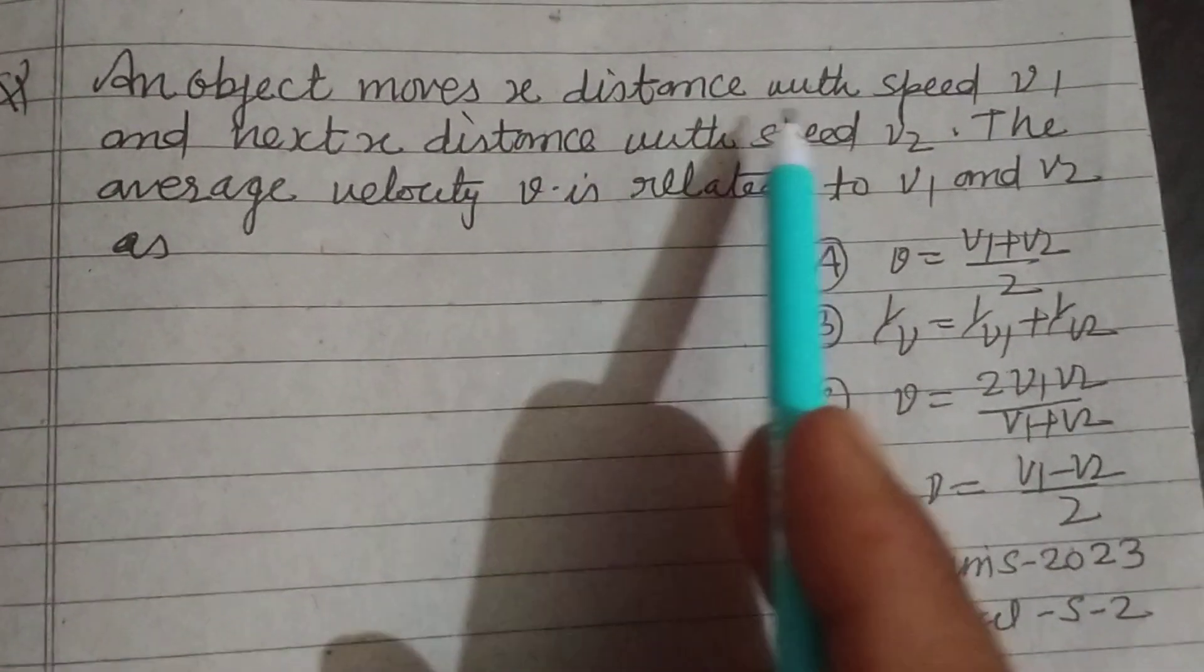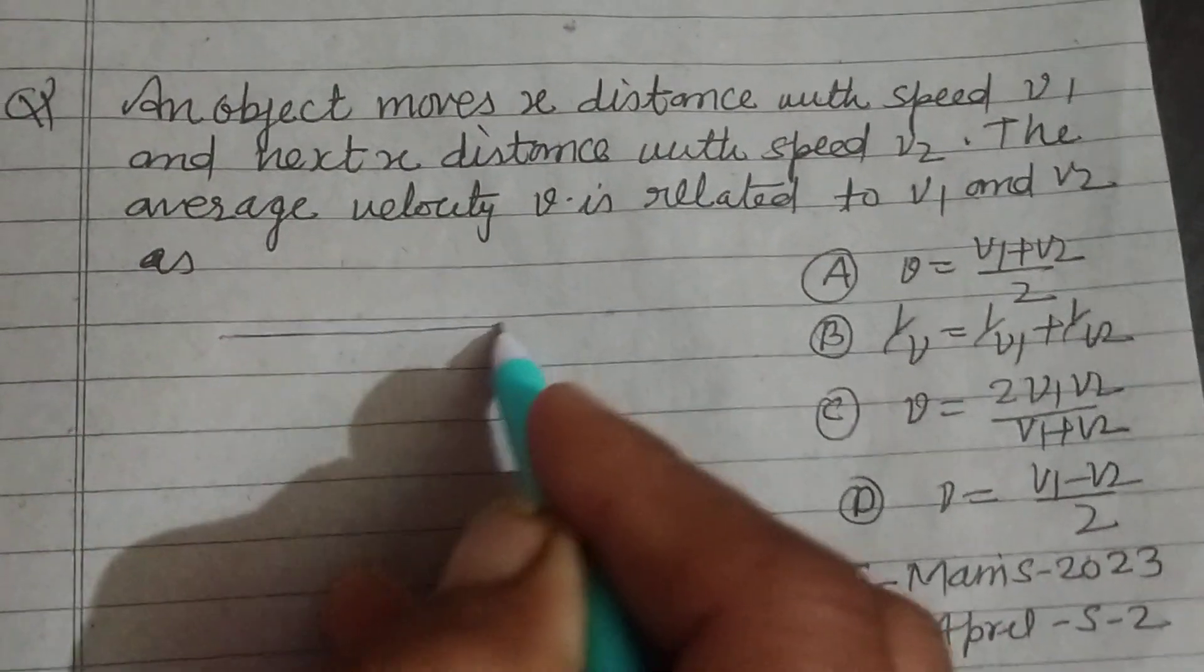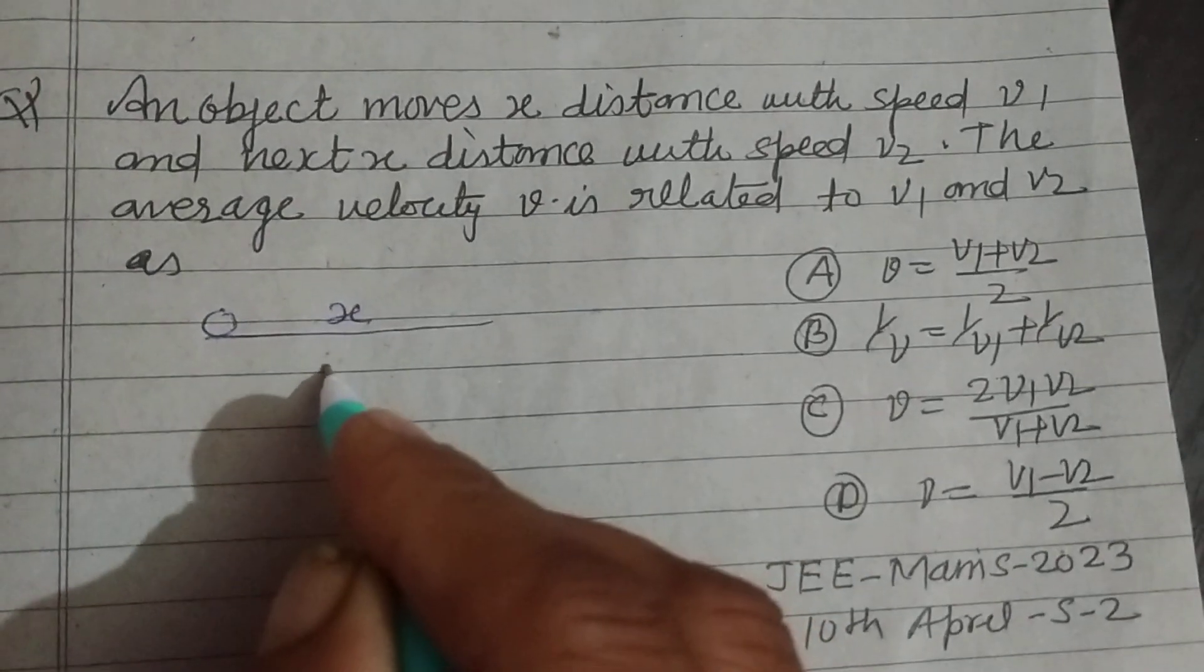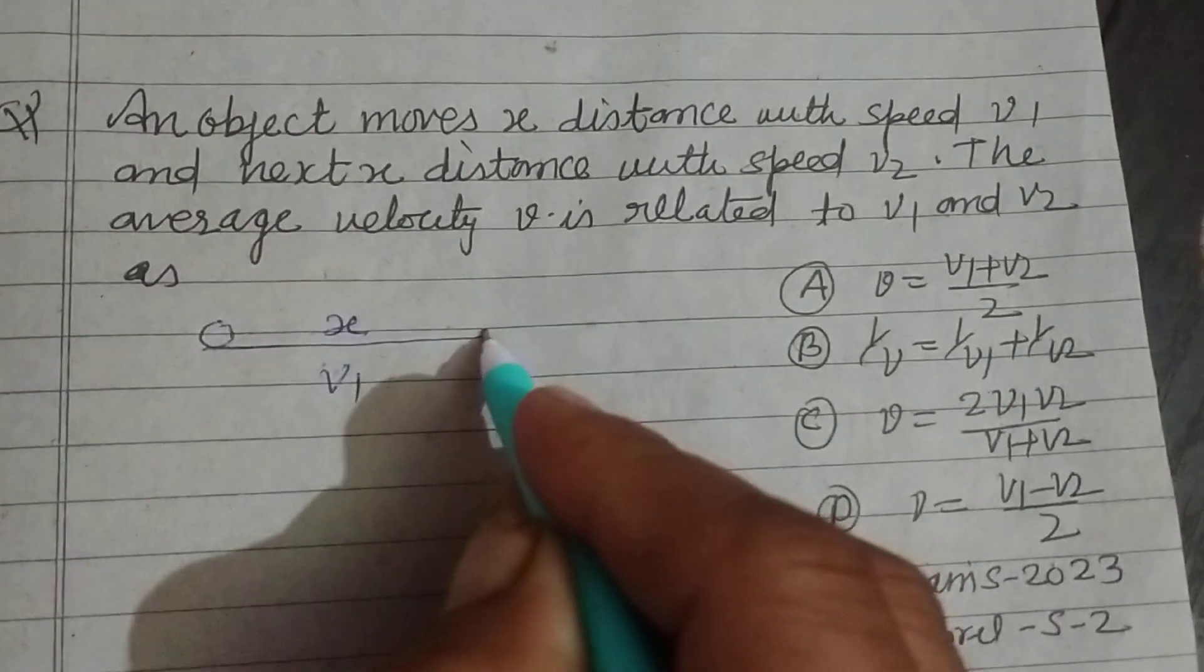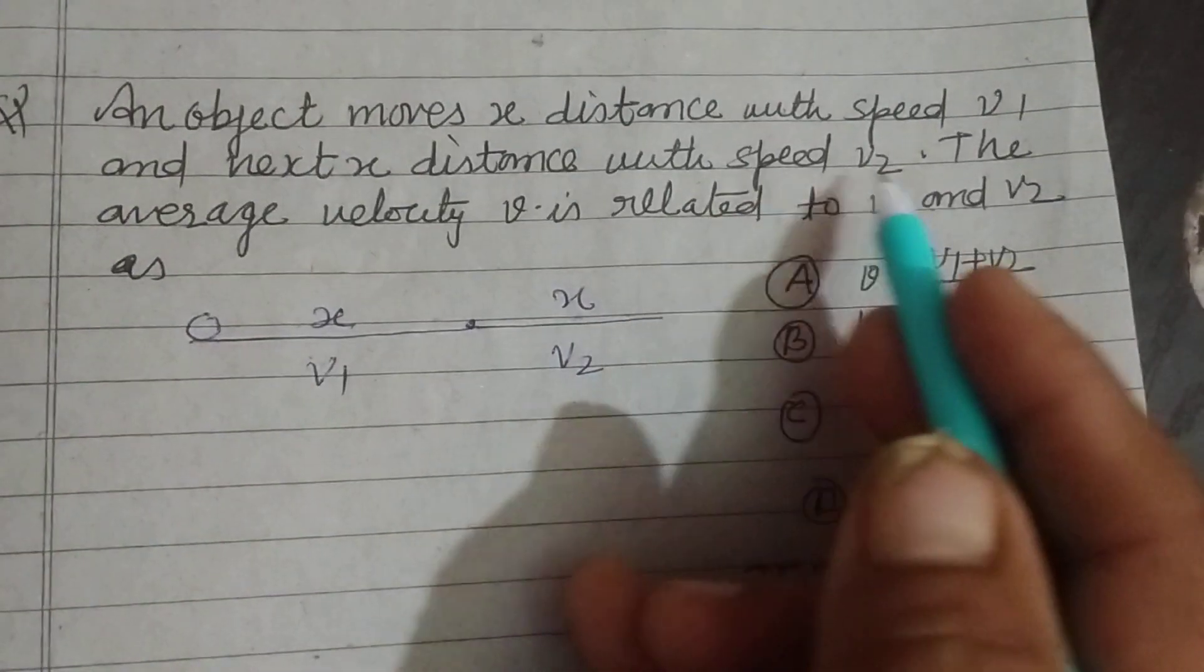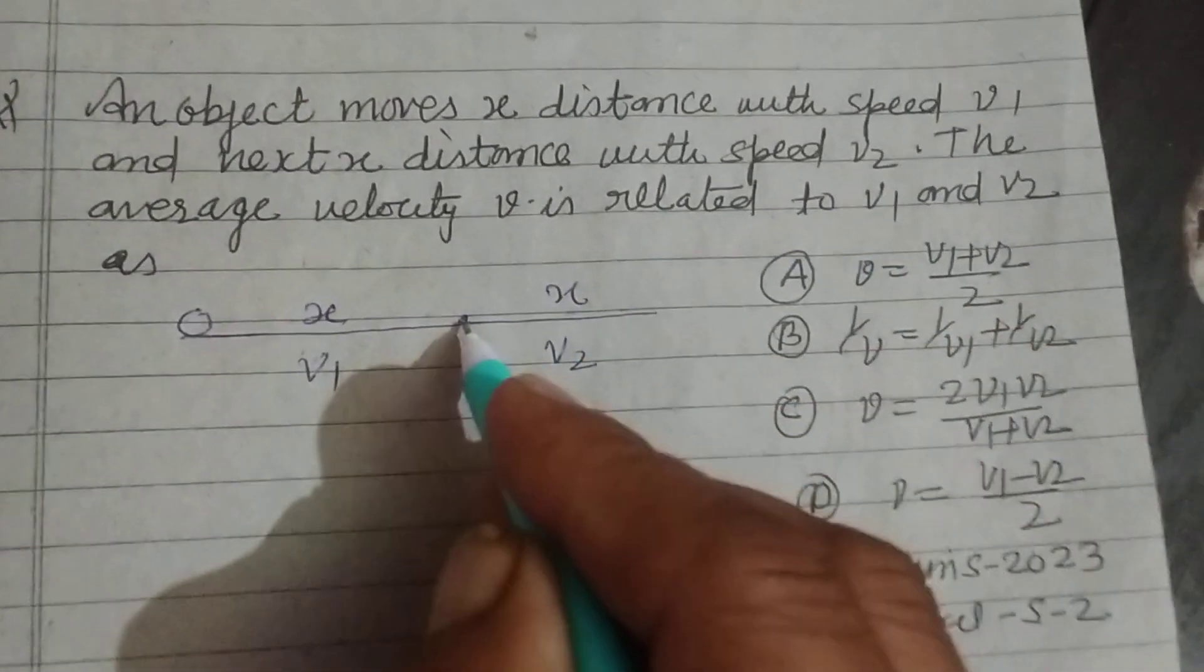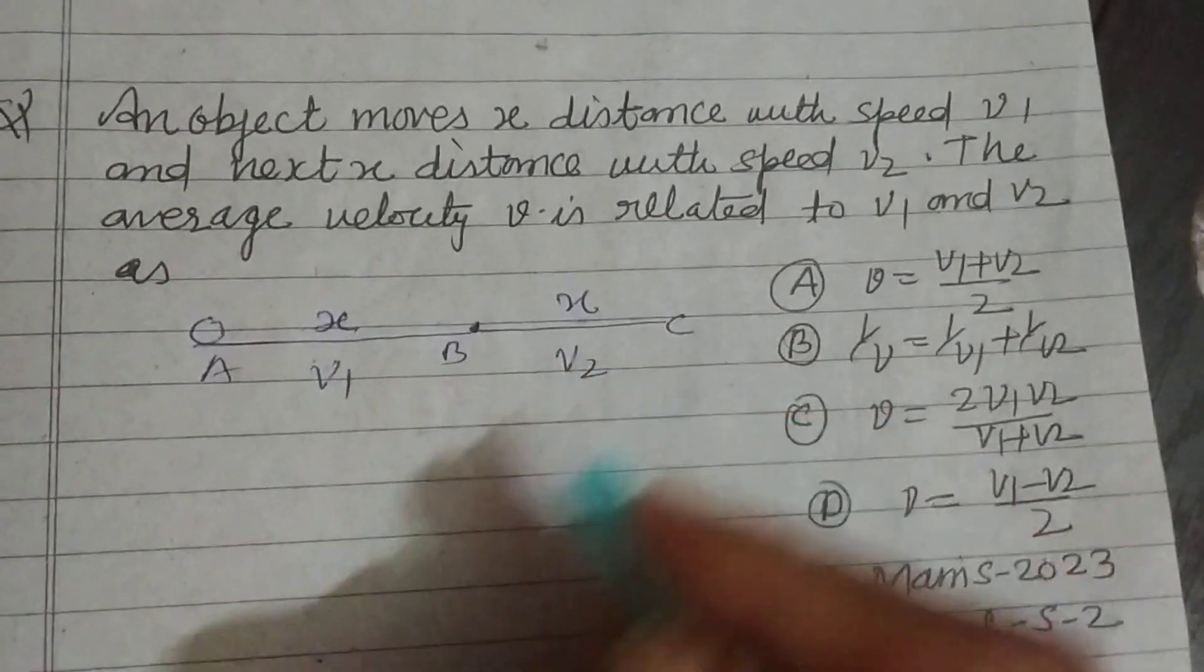An object moves x distance with speed v1 and next x distance with speed v2. The average velocity v is related to v1 and v2. So this is point A, B, C.